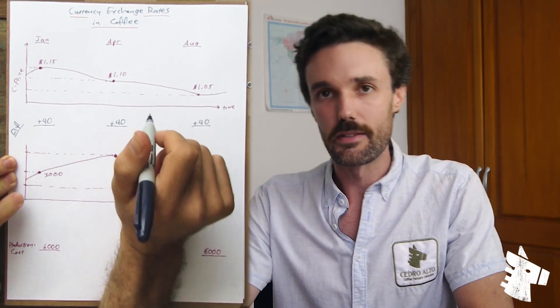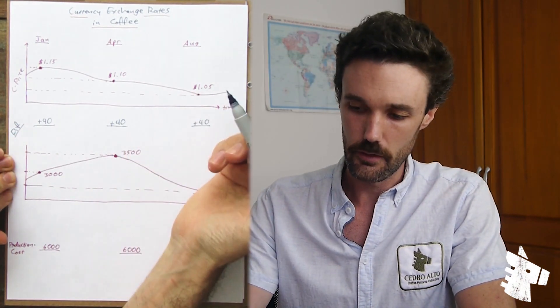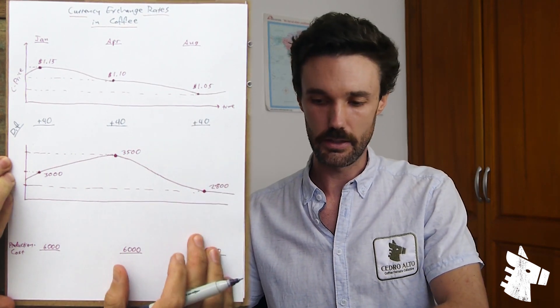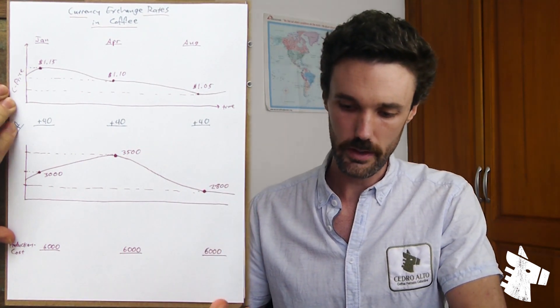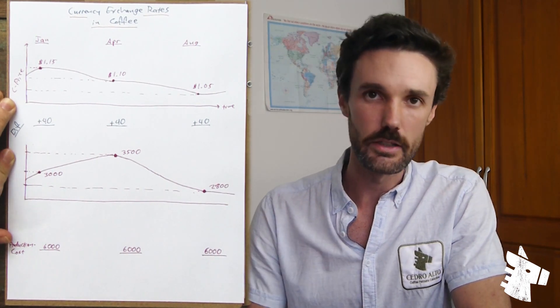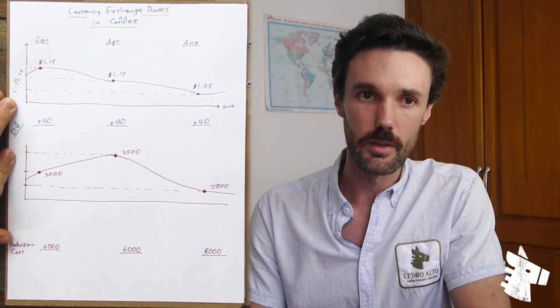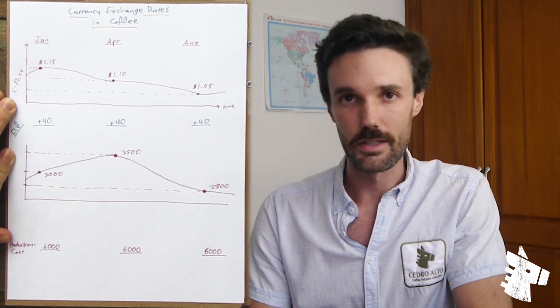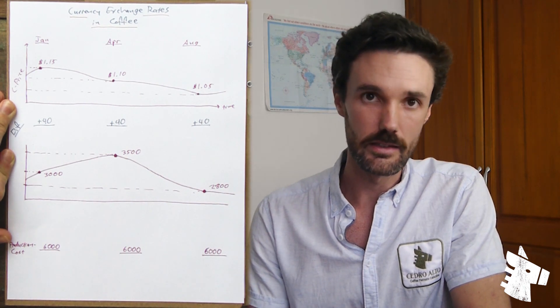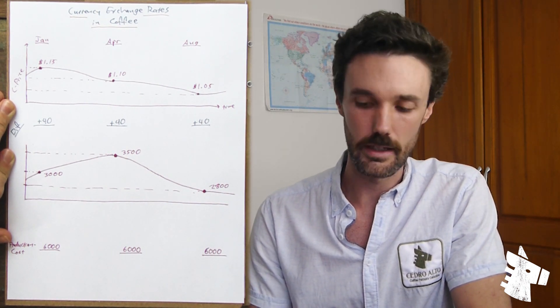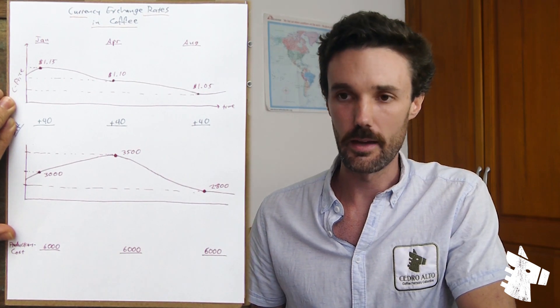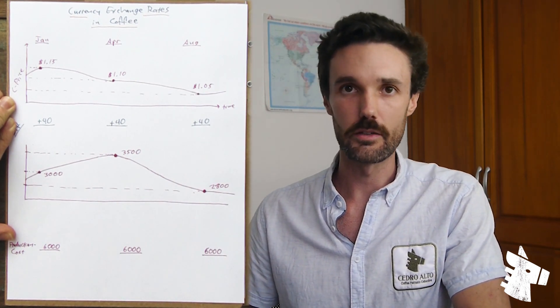Moving on, let's take a look at this applied example of the implication of exchange rate in a coffee supply chain with a fixed differential price. So let's take a hypothetical supply chain in which a green coffee importer was willing to purchase a certain green coffee at a plus 40 differential. So that's the C price plus 40 cents. We're going to look at how this scenario changes over time as the markets fluctuate.